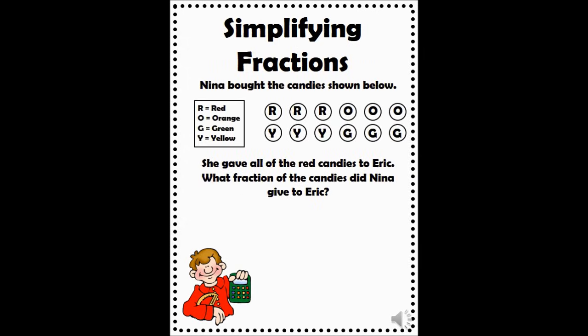Here is a sample EOG problem that can be solved using the simplify function on the TI-15. Nina bought the candies shown below. She gave all of the red candies to Eric. What fraction of the candies did Nina give to Eric? Students will typically say she gave three-twelfths of the candies to Eric. However, once students look at the answer choices, they realize their answer is not an option. Before assuming you have the wrong answer, check to see if your answer could be represented differently. In this case, you could simplify, getting answer choice C: one-fourth.